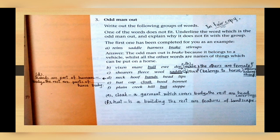The first has been completed for you as an example. A: it is rain, saddle, harness, brake, and stirrups. Which is the odd man out? Brake is odd man out. Why? Answer is written: the odd man out is brake because it belongs to a vehicle whilst all the other words are names of things which can be put on a horse. Now let's do B. Now students, before doing B, I want to tell you if you can write this in your textbook neatly as I have written, you may do this exercise in textbook. But if you are feeling difficulty to write, then we will write this exercise in fair copy also. B is vixen, mare, bull, ewe, and doe.